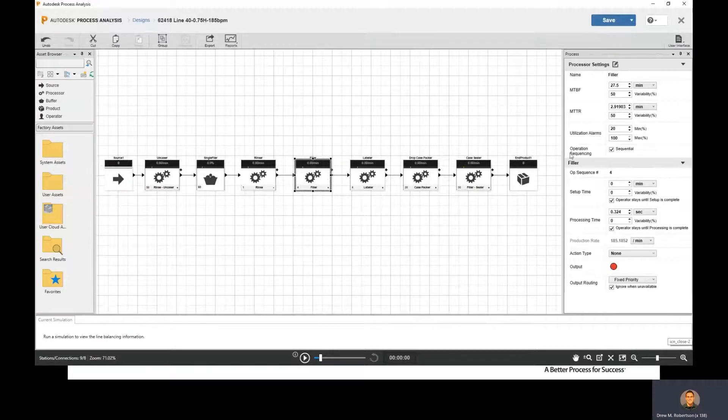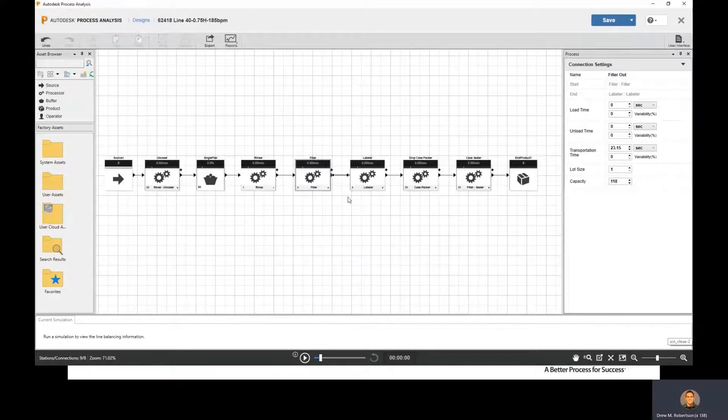So in Process Analysis, this looks very similar to the PFD. Each block is a piece of equipment and we're pulling in that mean time between failures and mean time to repair into each one of these pieces of equipment. And we have the production rates in here as well. Everything's set for the original speed of 185 bottles per minute that we saw on site.